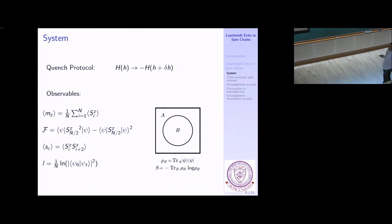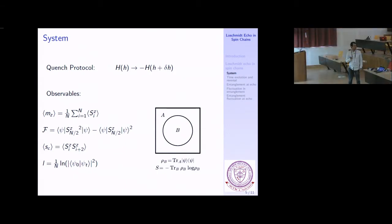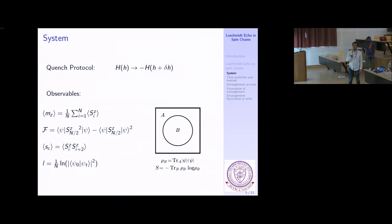We are familiar from basic quantum mechanics and classical mechanics that if we exactly change the Hamiltonian to its negative, the trajectory will exactly be reversed and the system will come back to the initial state. That is not very interesting. We want to know what happens if you reverse the Hamiltonian but not exactly — with a small change. Here h is the external applied transverse magnetic field, and we have a set of fairly standard observables.